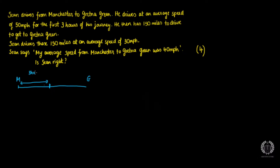For the first three hours he drives at an average speed of 50 miles per hour. So from Manchester, let's call the midpoint 'point X' — we don't know exactly where it is. From Manchester to point X, he drives for three hours at 50 miles per hour. And then from the second sentence, he has 150 miles to drive to get to Gretna Green — so from point X to his final destination, there is 150 miles of distance remaining.